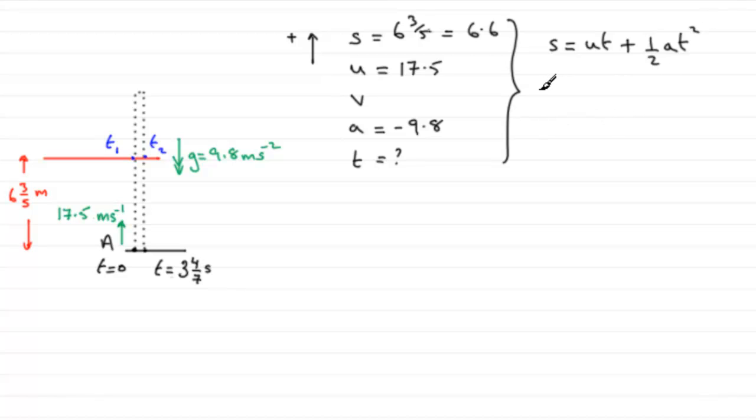If we put in our values, we're going to have for s, 6.6, so we've got 6.6 equals u times t, which is 17.5t, plus a half multiplied by a, which is minus 9.8, times t squared. So we've got a quadratic equation. That's good because we can expect two answers for t, t1 and t2, to come out of this.